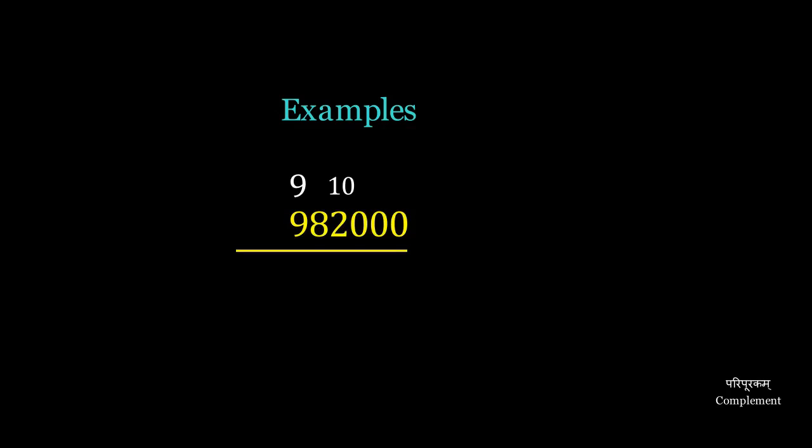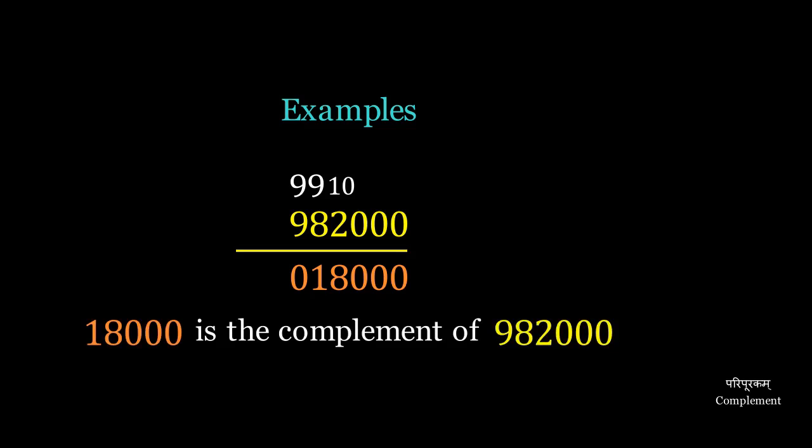982,000 has three zeros, all of which we ignore. We put a 10 above the last non-zero digit, 2, and 9 above the others. 9 minus 9 is 0, 9 minus 8 is 1, 10 minus 2 is 8, and the zeros remain, giving 18,000 as the complement of 982,000.